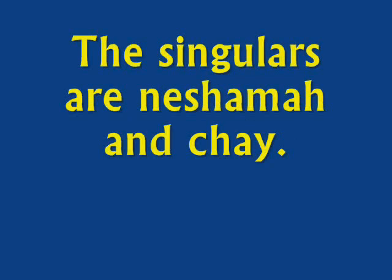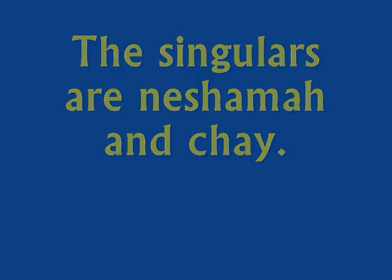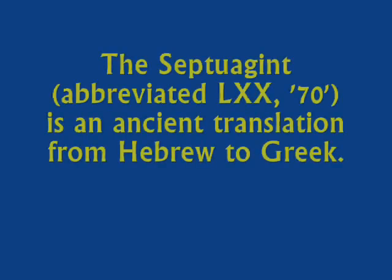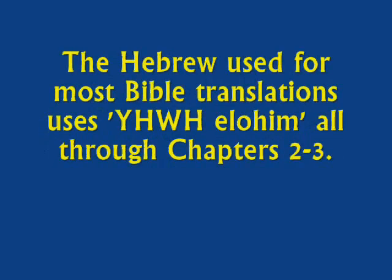It's plural. There is a Kabbalistic teaching that all of us were present in this initial complete person. Not all of us took part in the fall, though. There is an ancient Greek translation of the Hebrew called the Septuagint. We can compare the Septuagint with the traditional Hebrew that we have now and get some insight into how the Hebrew was understood a couple thousand years ago.